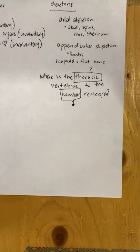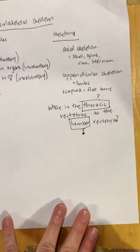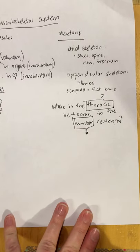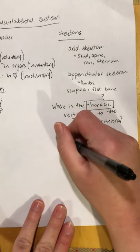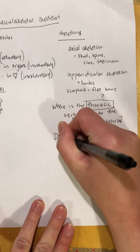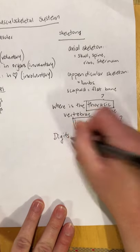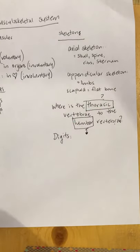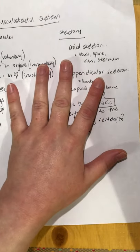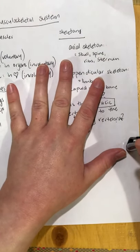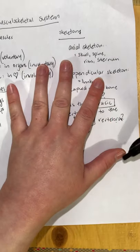We're going to move on from the bones of the skeleton. I want to talk about one other thing before we go into the terms, and that is the digits of the phalanges. When counting digits, we count from medial to lateral.